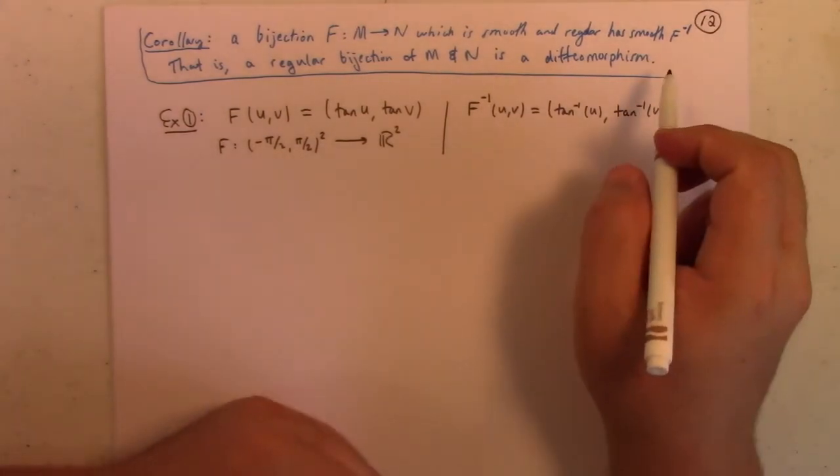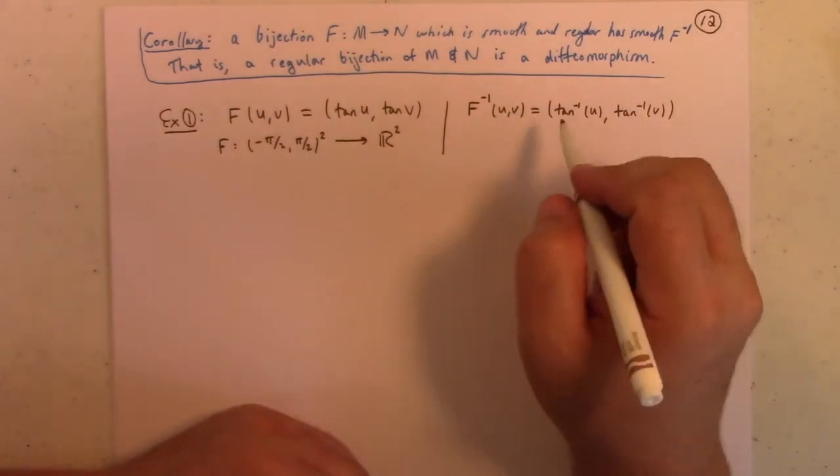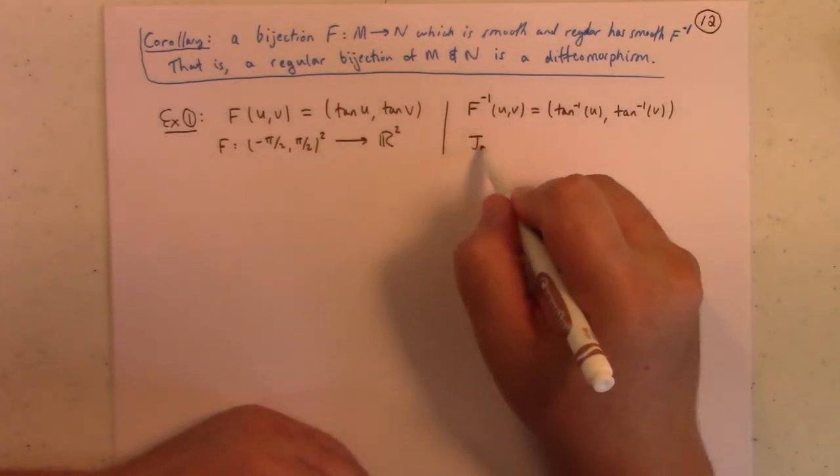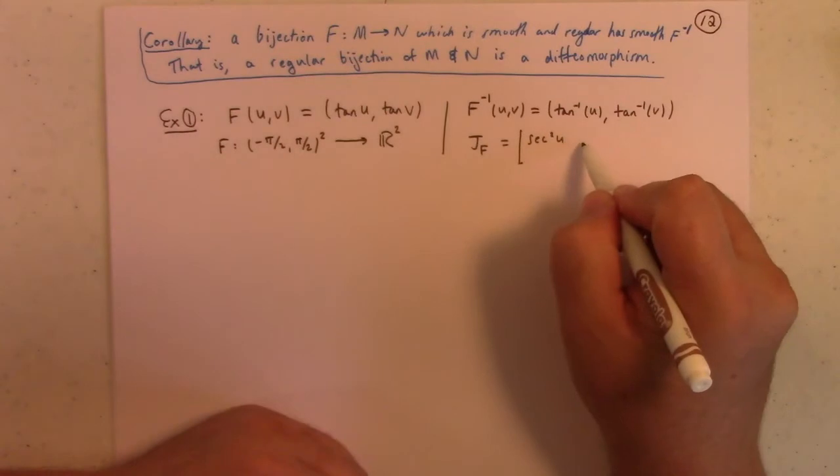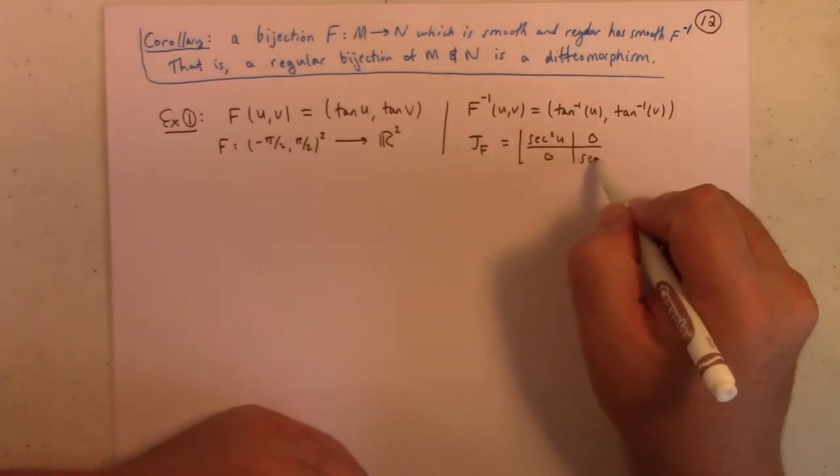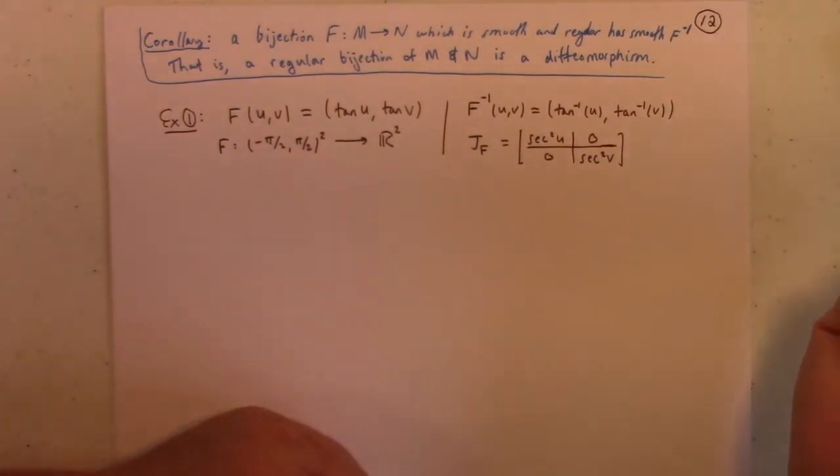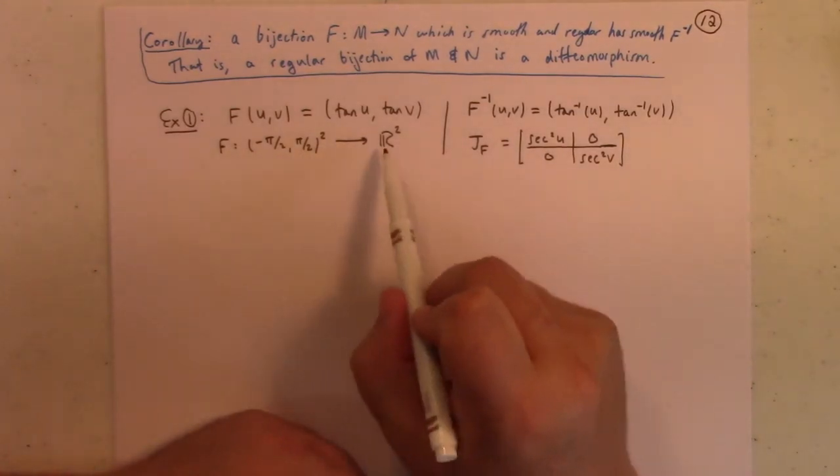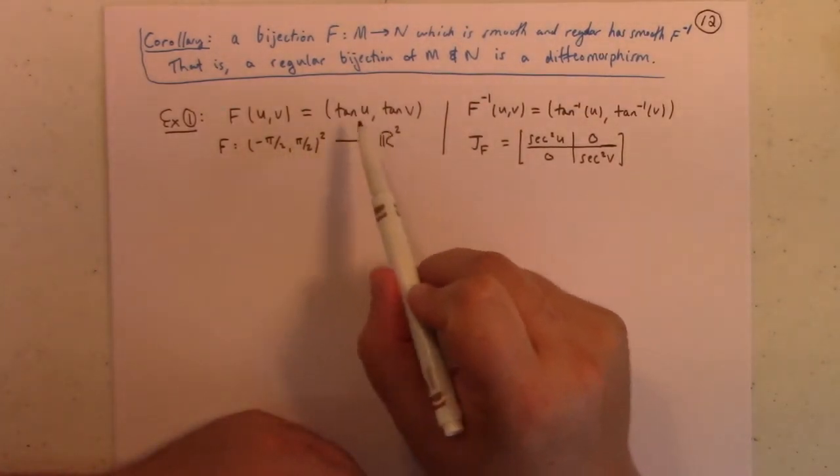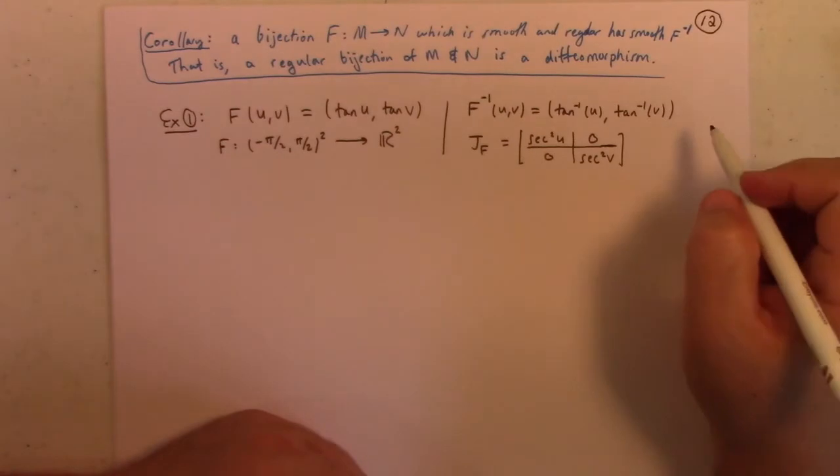And it's also easy enough to see that this mapping is regular at each point. So, the Jacobian of f is, in this case, it's secant squared u, 0, 0, secant squared v. And, you notice this time, I don't have to calculate the Jacobian of a local coordinate representative of f, because this is that kind of silly case where the coordinate representatives are just the Cartesian coordinates. So, the mapping is its own local coordinate representative, because of the nature of the example, which makes it particularly simple.